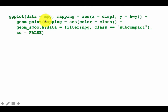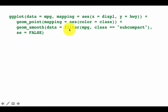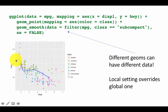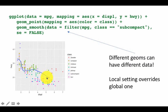Now notice: geom_point has mapping color=class, and for geom_smooth we have set data=filter(mpg, class=='subcompact'). In other words, for this particular geom we are overriding the data — instead of using the global mpg data, we use a filtered version containing only subcompact cars. So the smooth graph shows only the subcompact cars, not all the cars.